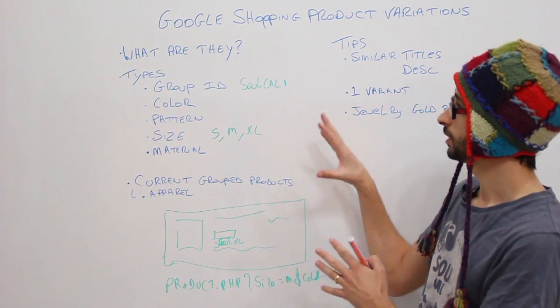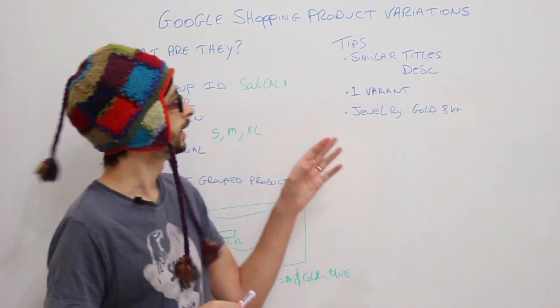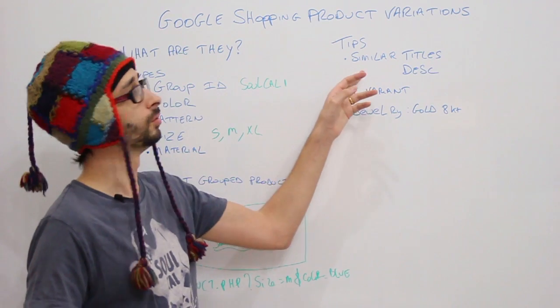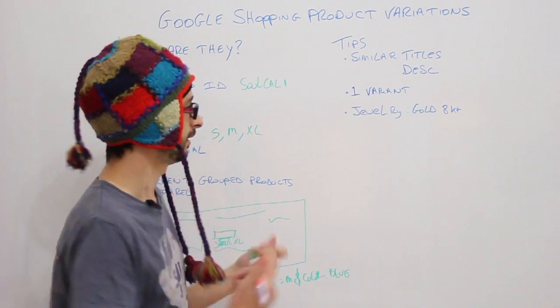That's pretty much the grouping system. Now I've got a couple of tips. As I mentioned before, make sure that your titles are very similar. For example, if I have SoCal here,